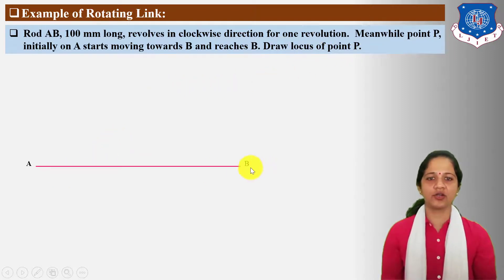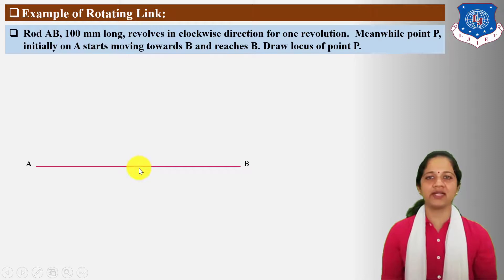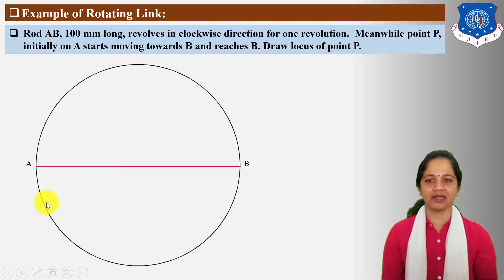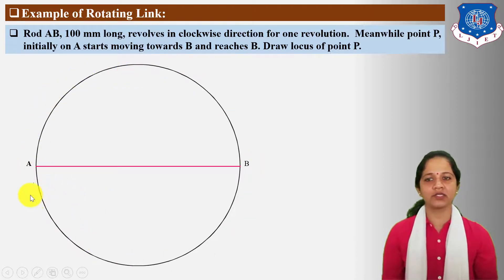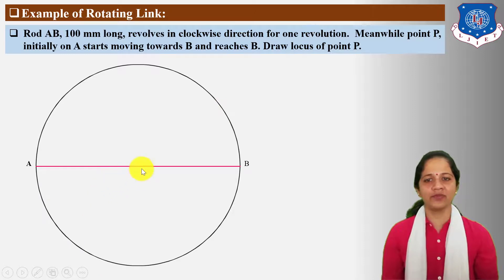First, draw AB road. The length of AB road is given 100 mm. From the centre point of AB road, draw a circle which indicates the path or locus of points A and B when this rod revolves from the centre point.